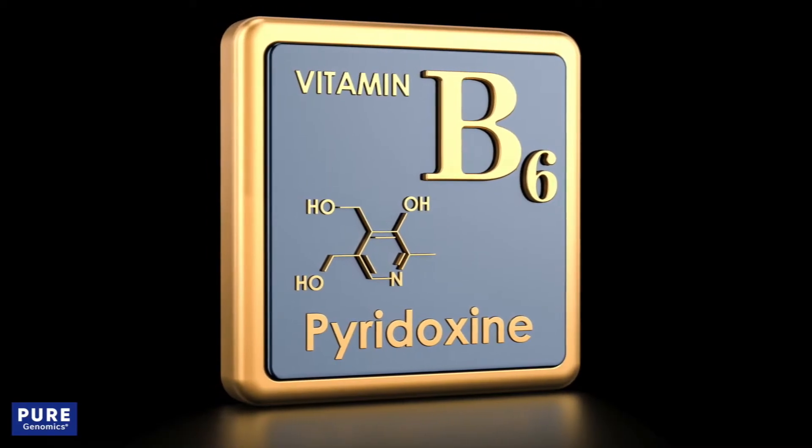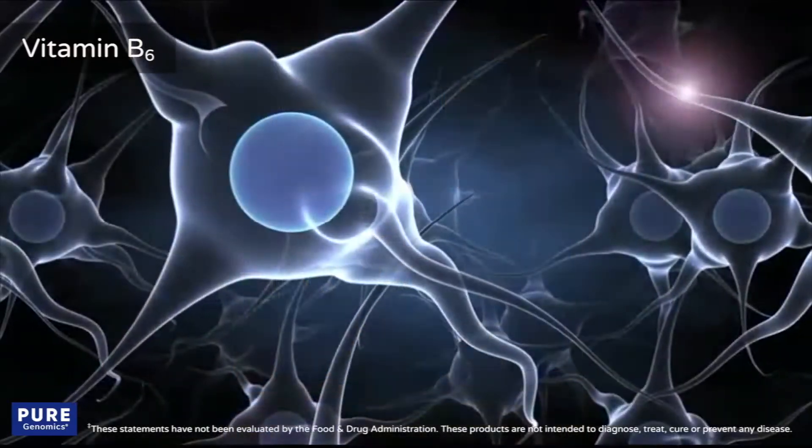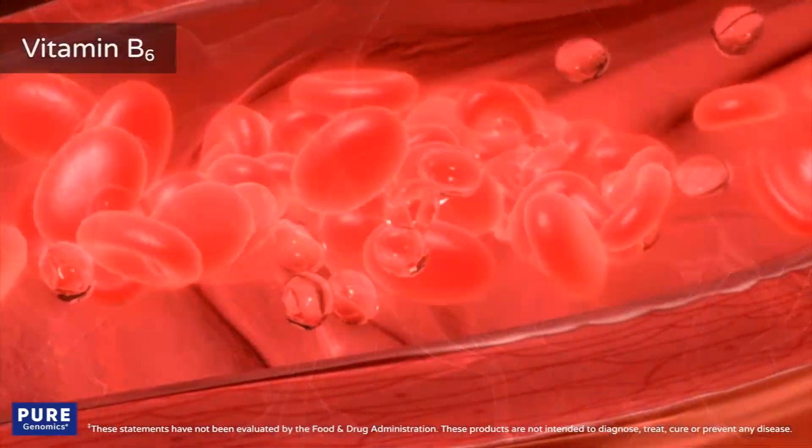Vitamin B6, also called pyridoxine, is essential for proper neurological function and healthy red blood cells.